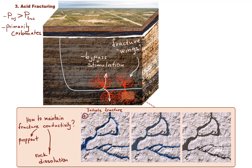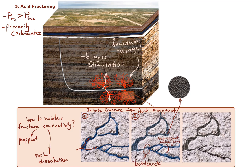First, we pump acid or some viscous fluid to raise the pressure and open the fracture. But if we stop the injection, pressure will drop and the fracture will close. Therefore, before releasing the pressure we prop the fracture with sand or similar material called proppant to keep the fracture open and maintain its conductivity. Often there would be fracture wings we can't effectively pack with proppant, and once pressure is released those fractures will close. If proppant was placed in the fracture then conductivity will be maintained; if there is no proppant we may lose that conductivity pathway because the fracture will be completely shut.